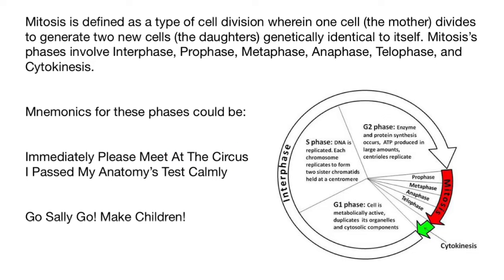Each first letter in each word stands for one phase. For example, 'Immediately' starts with I — I means interphase. 'Please' starts with P — that means next goes prophase. 'Meet' starts with M — then we know that this is metaphase.